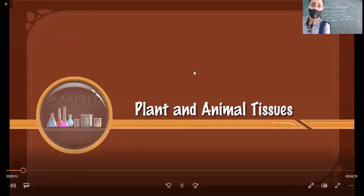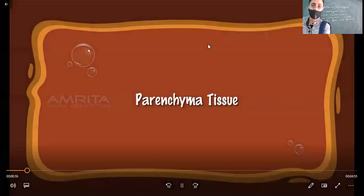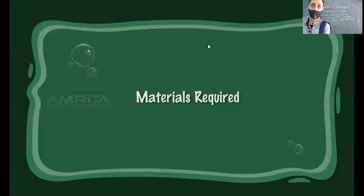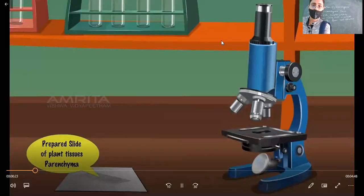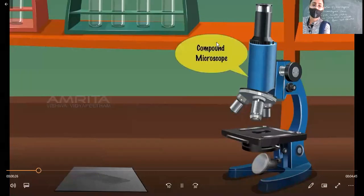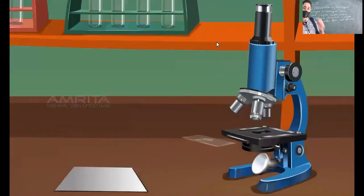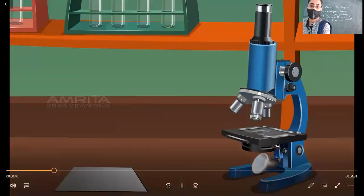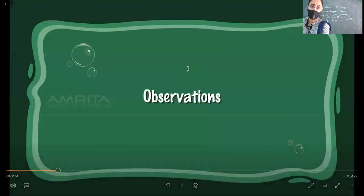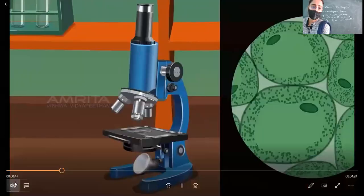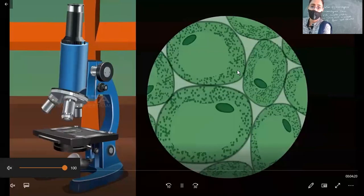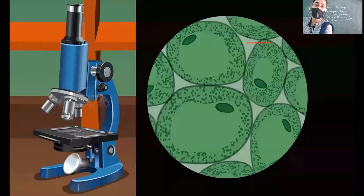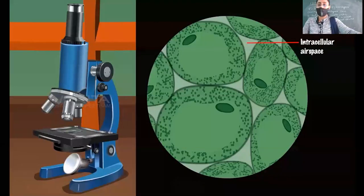Now sharing the video on plant and animal tissues. Parenchyma tissue — materials required: prepared slide of parenchyma tissue and a compound microscope. Procedure: place the prepared slide of parenchyma tissue on the stage of the compound microscope and observe the features through the lens of the compound microscope. Observations: all cells are isodiametric in shape.